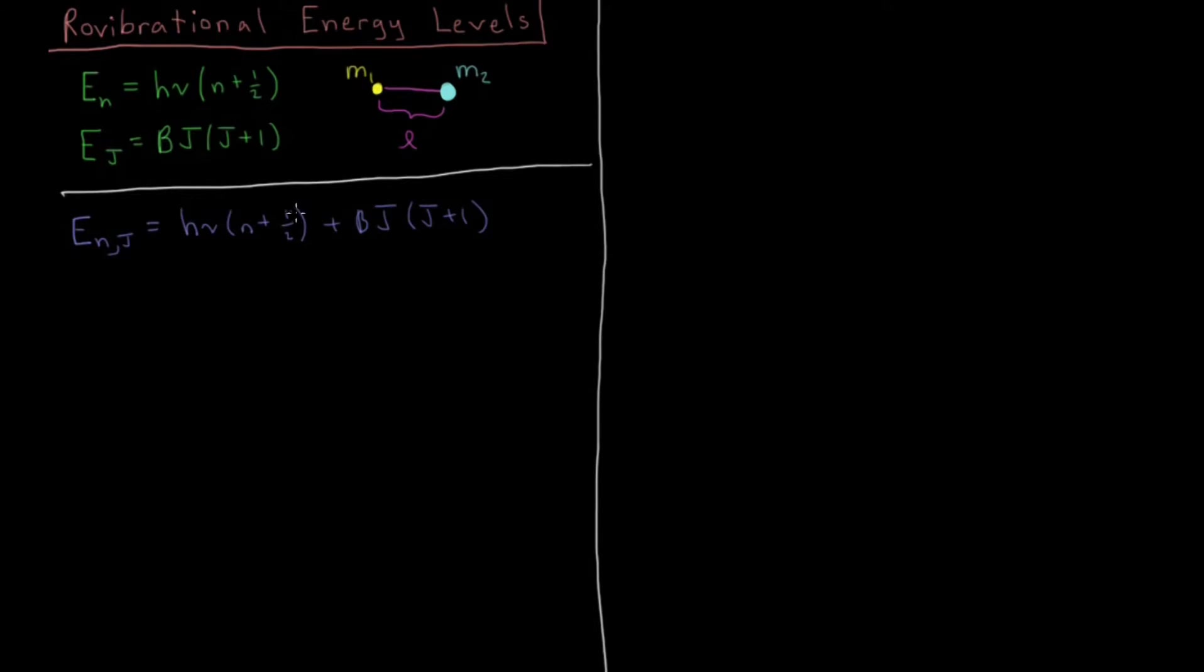But then we want to also convert these into wave numbers because, as we know, spectroscopists love wave numbers. So to do that, we divide everything by the speed of light and put it in the units of inverse centimeters. And that gives us this omega bar, which we talked about for the harmonic oscillator, times n plus 1 half, plus, instead of b, we have b bar, j times j plus 1.